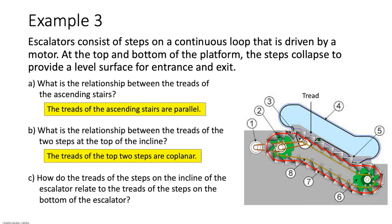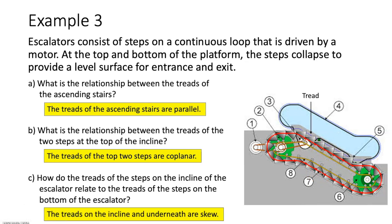Part C — how the treads on the incline relate to the treads at the bottom of the escalator: the treads on the incline are horizontal while the treads at the bottom are slanted downward. They are on separate planes and are not parallel, so these treads are skew to one another. If you consider them extended forever they would eventually intersect, so intersecting planes is also an acceptable answer for finite planes.